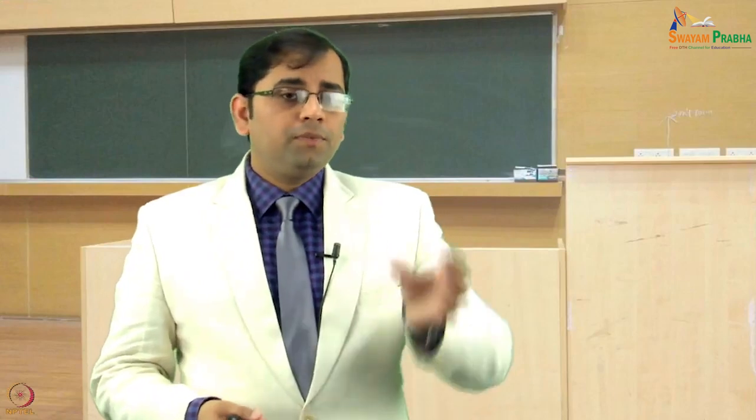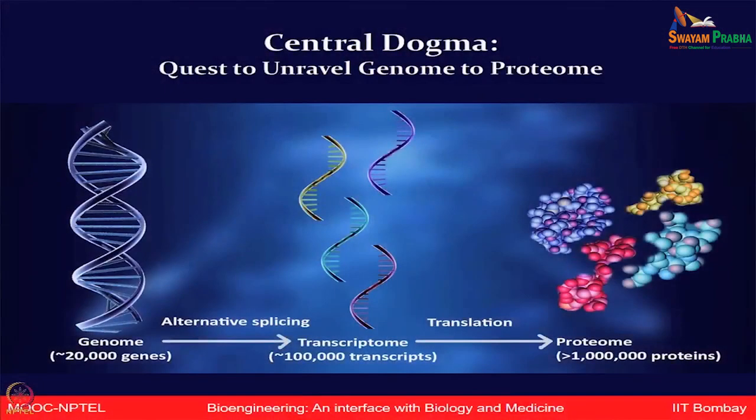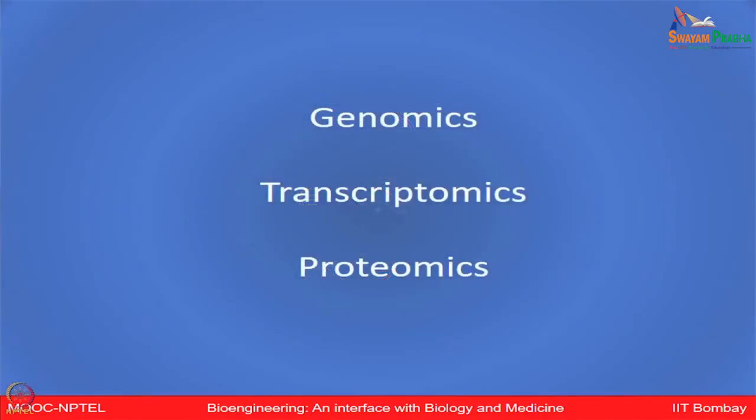We had gone back to the central dogma concept, where the quest was to unravel the genome and then further the proteome. Just to remind you about the central dogma: from genes, after the process of alternative splicing, transcripts are formed, and then through the process of translation, proteins are formed. So if we think about all the genes of a system, that is the genome; all the transcripts of a system, that is the transcriptome; all the proteins of a system, that is the proteome.